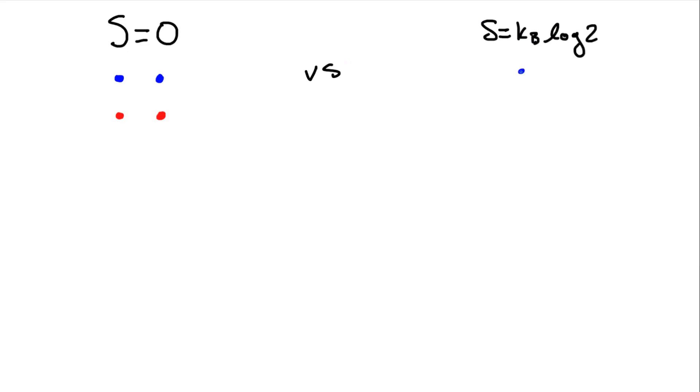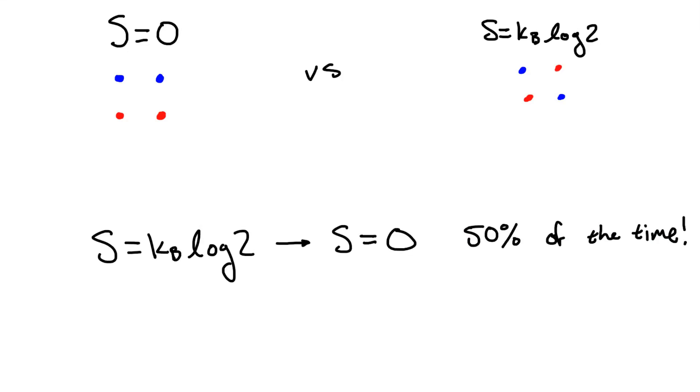If our system randomly exchanges energy with the heat bath as we would expect, that means that we have a 50% chance of measuring the system in the high entropy state and a 50% chance of measuring it in a low entropy state. Clearly, the entropy can decrease and we've violated the second law, right?